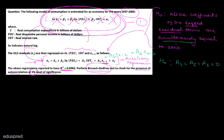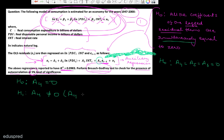In our question, we only have one lagged residual term, so our entire focus is on A4. The null hypothesis is A4 = 0, and the alternative hypothesis is A4 ≠ 0. You can also write A4 > 0, because when working with economic data, we generally don't worry much about negative serial correlation. We typically consider only the possibility of positive serial correlation, which is why the alternative can be written as A4 > 0.